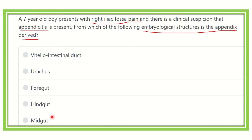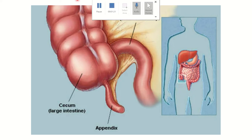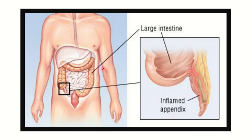First, let's look at the appendix. Here we can see the appendix on the right side of the abdomen in the right iliac fossa. It is a worm-like structure arising from the lower part of the cecum. The small intestine terminates into the cecum, and from the cecum there is the ascending colon.